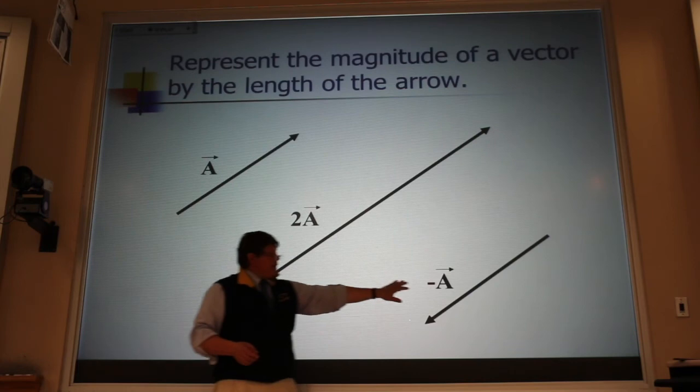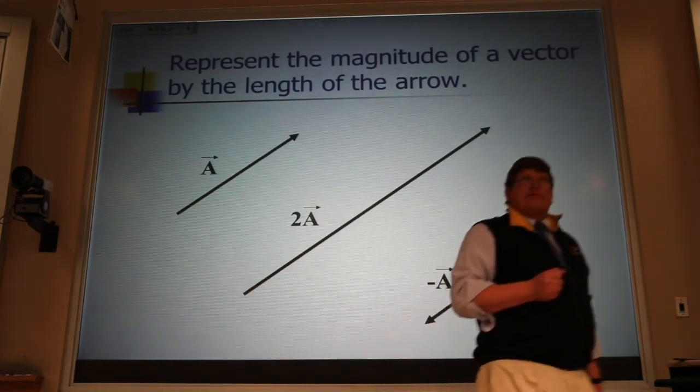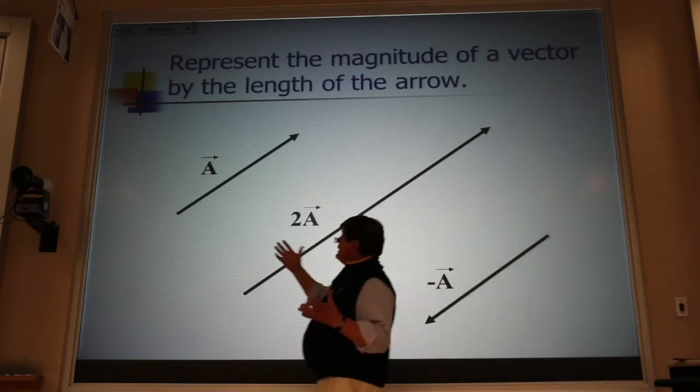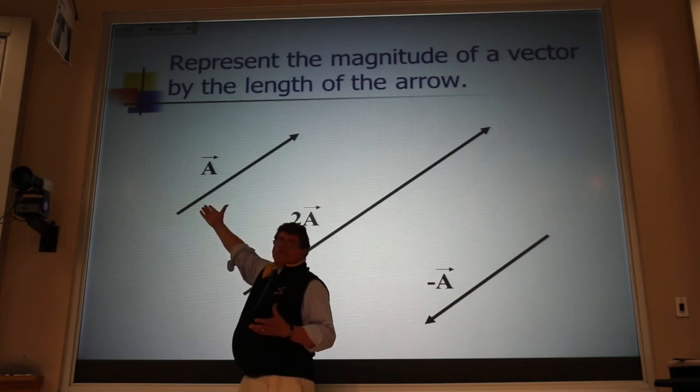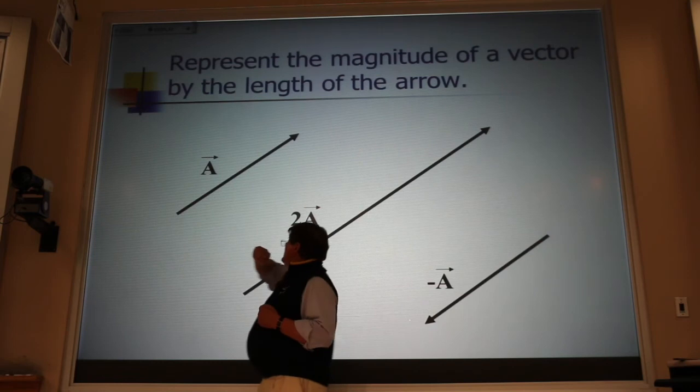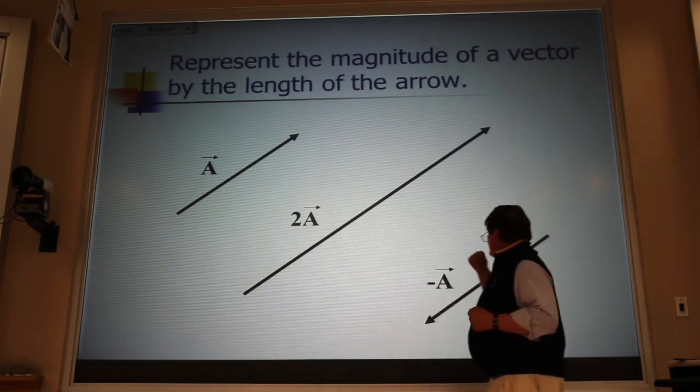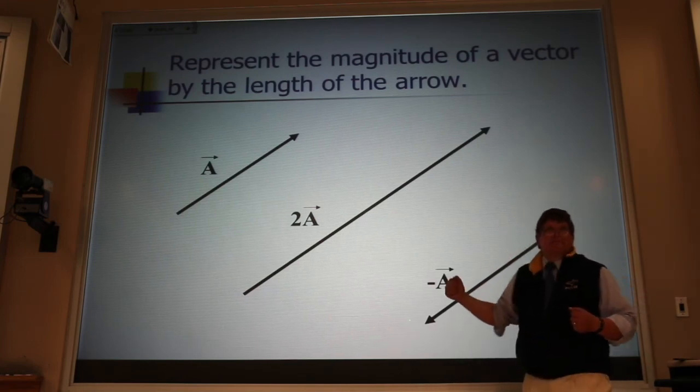If you multiply a vector by a minus sign, you reverse the direction. So if these vectors represented velocity, let's say that represented 60 miles an hour towards Belgrade, and this would be 120 miles an hour towards Belgrade, and this would be 60 miles an hour away from Belgrade.